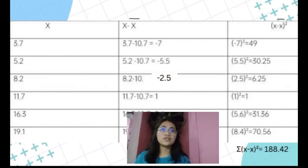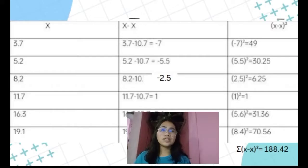Negative 7 squared equals 49. 5.5 squared equals 30.25. 2.5 squared equals 6.25. 1 squared equals 1. 5.6 squared equals 31.36. And 8.4 raised to 2 equals 70.56. After that, we add all the answers, and the total is 188.42. That is our summation of x minus x-bar, raised to 2.